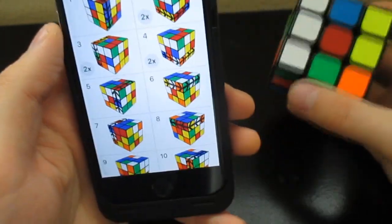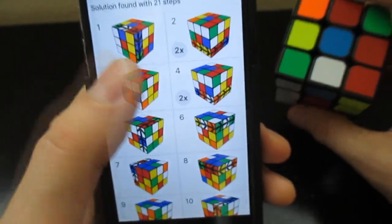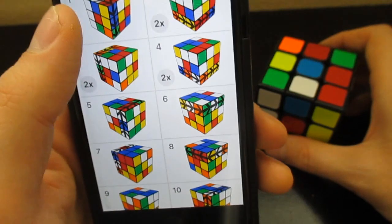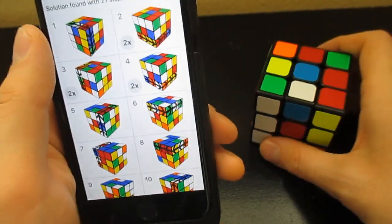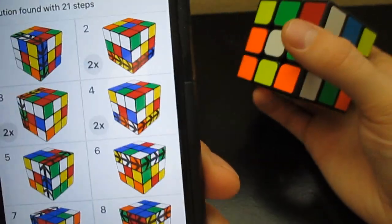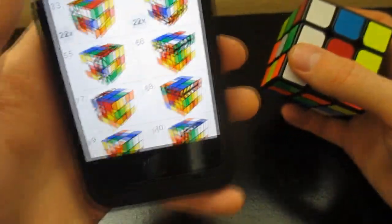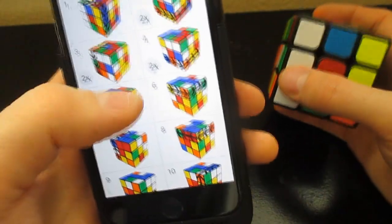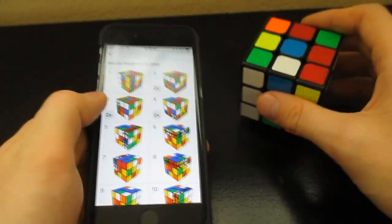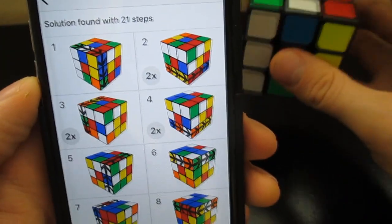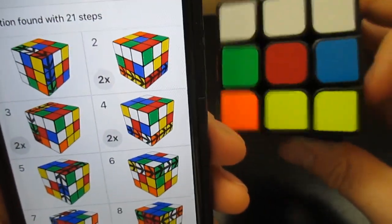And look at that, 21 steps. The 2x means you have to turn that twice. For those of you who don't know, that means you have to turn the layer twice. So basically what this does is, instead of having the algorithms actually drawn for you in image style, so here it is.